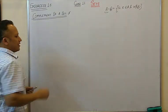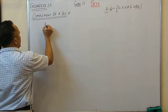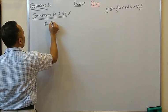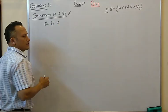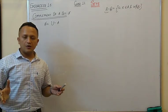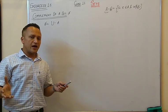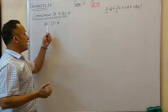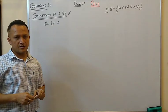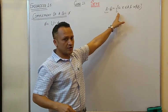Now, complement of a set is actually Universal minus A. To find the complement of a set, we have to discard the elements of A from the universal set. The complement represents everything in the universal set that is not in A.